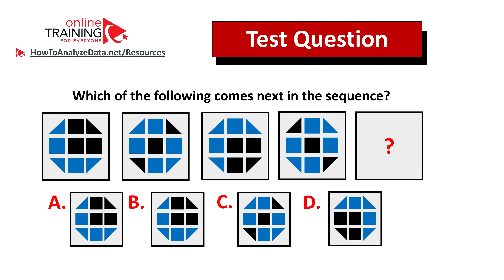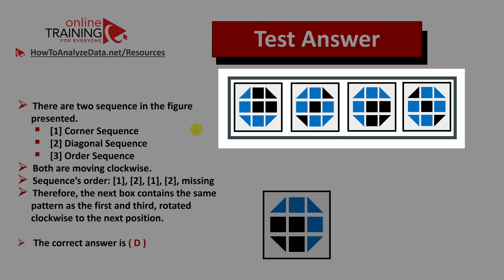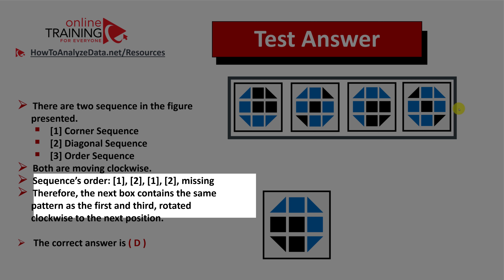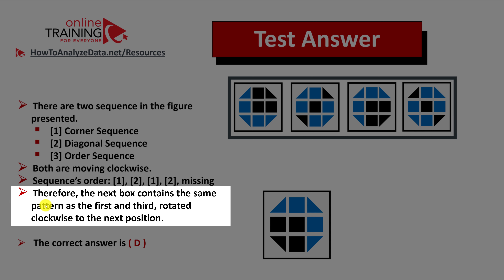Did you figure out the pattern? Let's solve this challenge together. Always look for patterns — there are at least three different patterns here. There's a corner sequence where boxes appear in the upper right corner and move clockwise: upper right in box one, then in box three it becomes the bottom right corner. There's also a diagonal sequence shown in boxes two and four, which also moves clockwise — from top right to bottom left in box two, and from upper left to bottom right in box four.